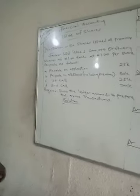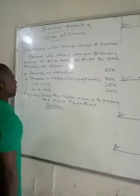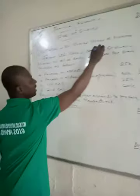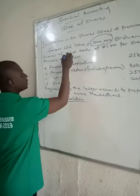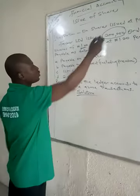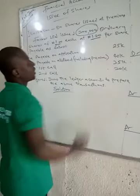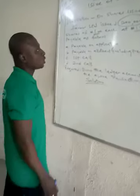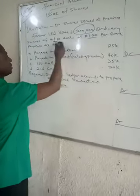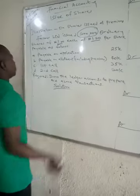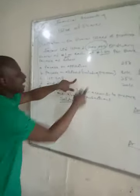Favor Limited issued 200,000 ordinary shares of ₦1 at ₦1.20 per share. The total units issued is 200,000, and the nominal value is ₦1. These shares are not at nominal value but at a premium of ₦1.20. So the premium is 1.20 minus 1.00, which gives you 20 kobo. The premium is 20 kobo.